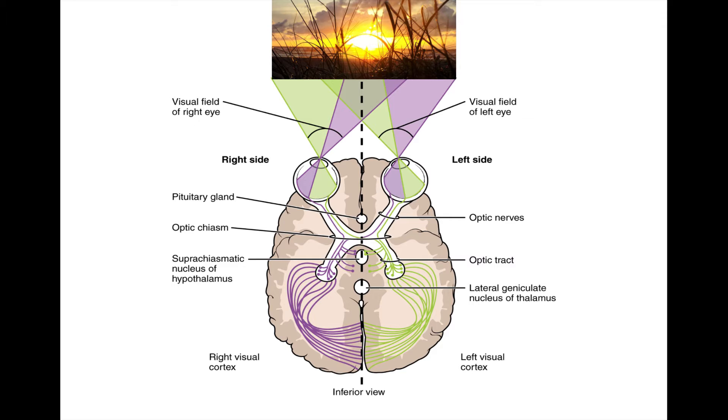After departing from the eye, the optic nerve travels to the optic chiasm, which is located just under the hypothalamus in the pituitary gland. Visual information from the medial part of the retina crosses over here, while information from the lateral part of the retina stays on the same side.